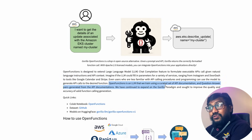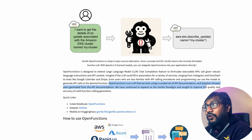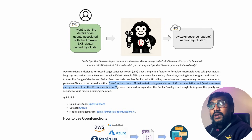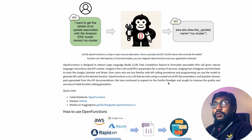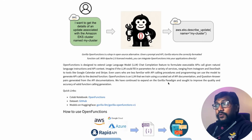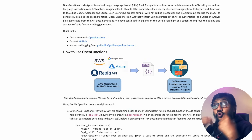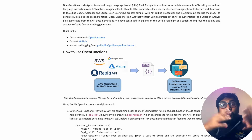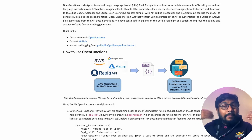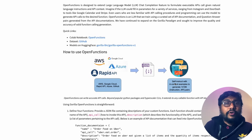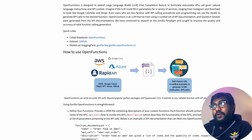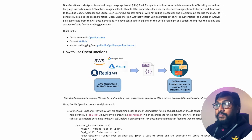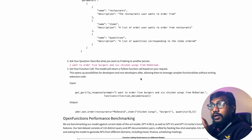Open Functions is an LLM trained using a curated set of API documentation question-and-answer pairs from API documentations. By default it supports a lot of Python libraries and SDKs, but it is also easily extendable to any other documentation that you have.